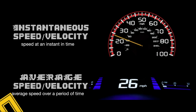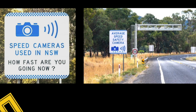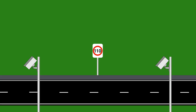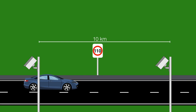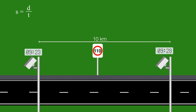Traditional speed cameras measure your instantaneous speed. The problem is they only deter speeding at the point of the camera. Many places have introduced average speed cameras, which ensure you're not speeding over a large distance. Here's how they work: two cameras are placed 10 kilometers apart with a speed limit of 110 km/h. A driver passes the first camera at 9:23 and is picked up again 10 km later at 9:28 — five minutes have passed. Speed equals distance over time: distance is 10 kilometers.